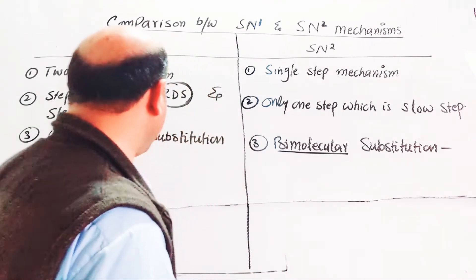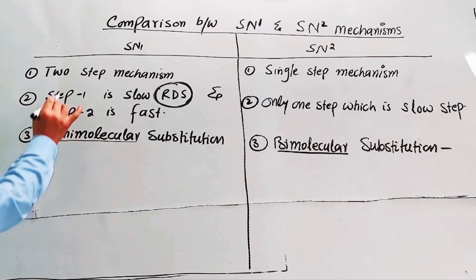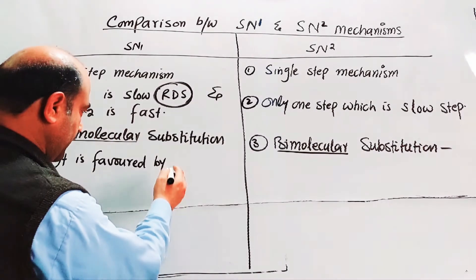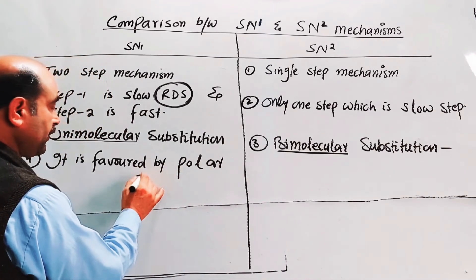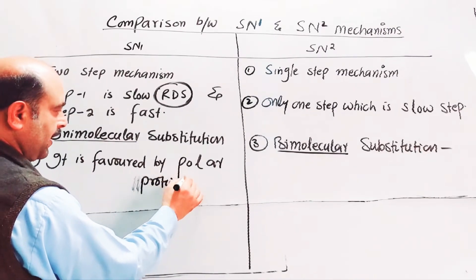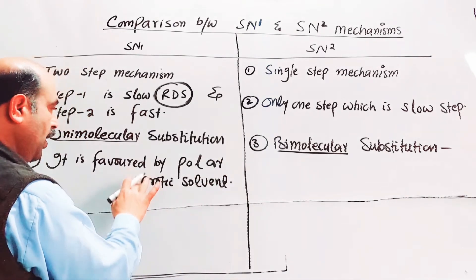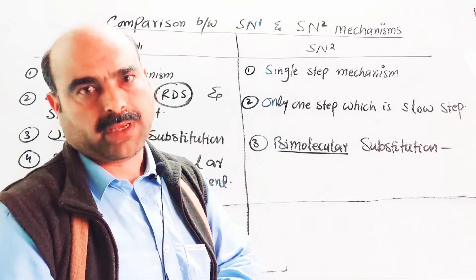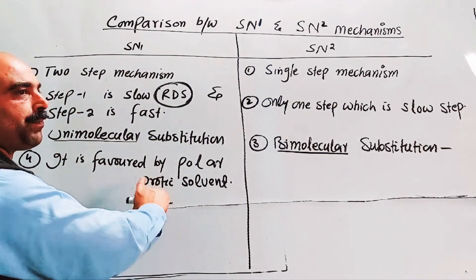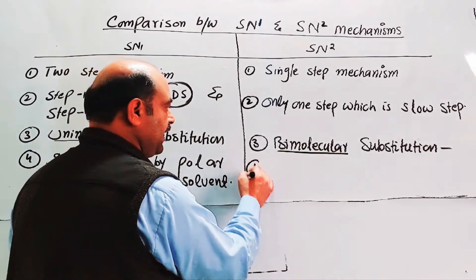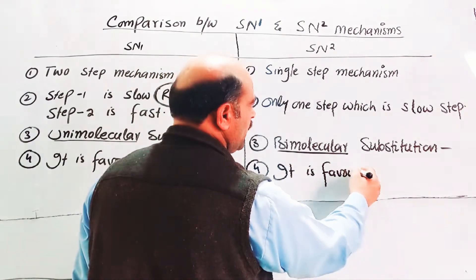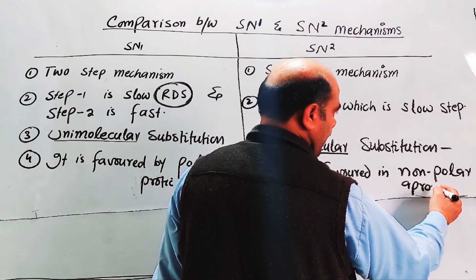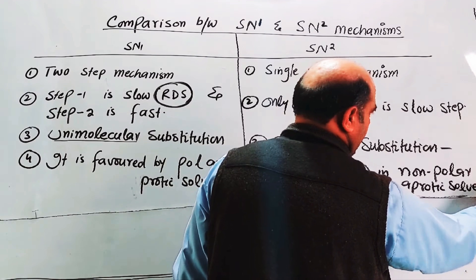Fourth difference: SN1 mechanism is powered by polar protic solvent — a solvent that has partial positive hydrogen (proton). SN2 mechanism is powered by non-polar aprotic solvent — a solvent without proton or partial positive hydrogen.